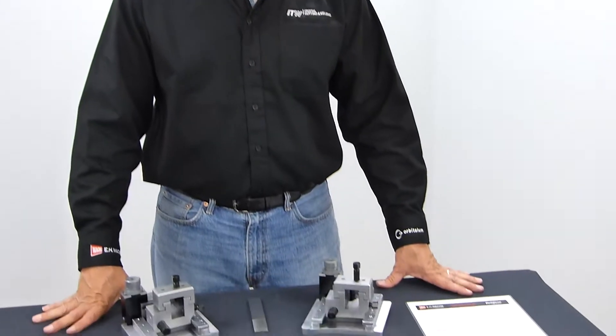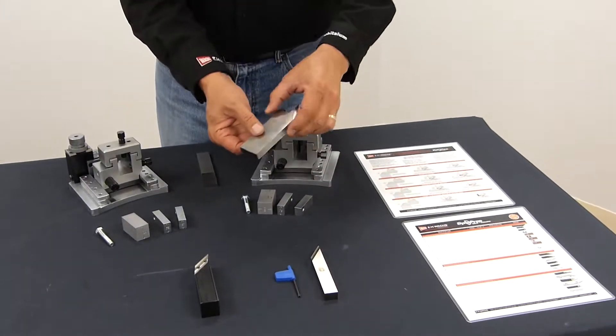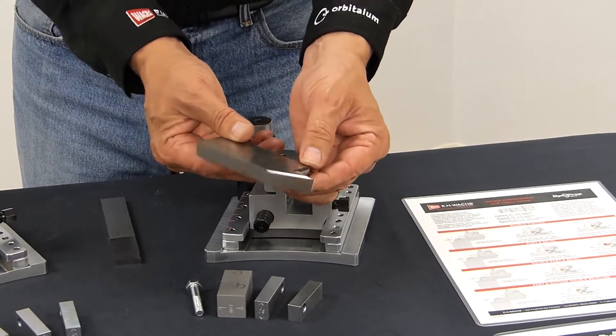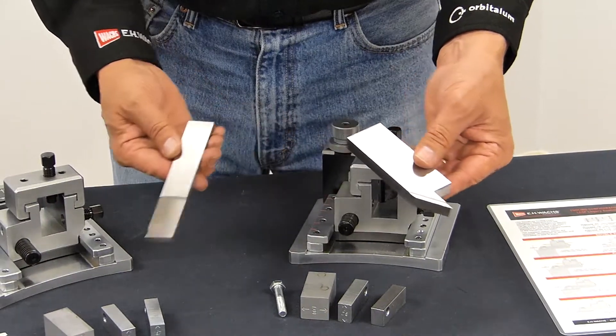Now we're going to set our tool slides up to part and outside bevel using the legacy tooling. For this, we'll need the legacy outside bevel tool, parting blade, and our spacers.